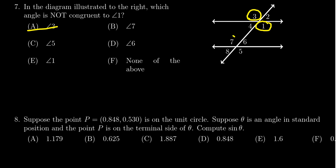We get that 1 and 7 are congruent because those are alternate interior angles. Take that off the list.